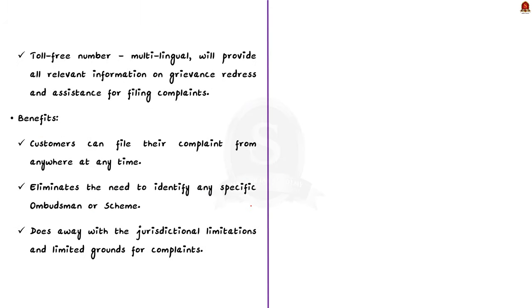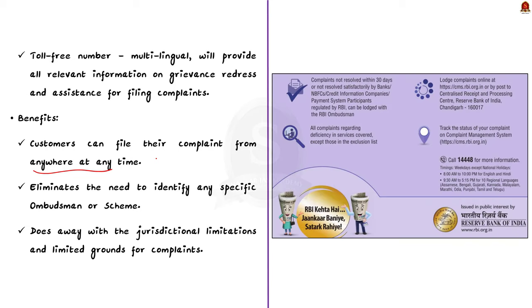The overall benefits include: first, customers can file complaints from anywhere at any time; second, it eliminates the need to identify any specific ombudsman or scheme; third, the new scheme removes jurisdictional limitations and limited grounds for complaints. Importantly, only complaints not resolved within 30 days or not resolved satisfactorily by banks, NBFCs, credit information companies, or payment system participants regulated by RBI can be lodged with the RBI Ombudsman. All complaints regarding deficiency in services are covered. RBI's Executive Director in charge of Consumer Education and Protection is the appellate authority under the integrated scheme.